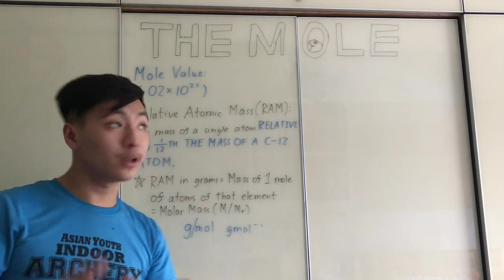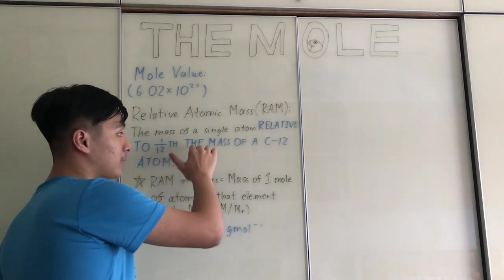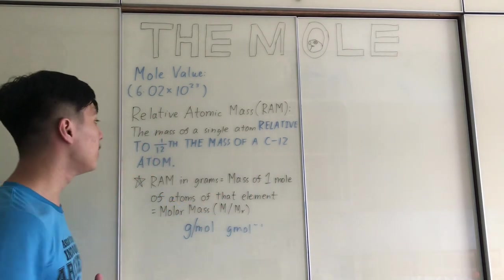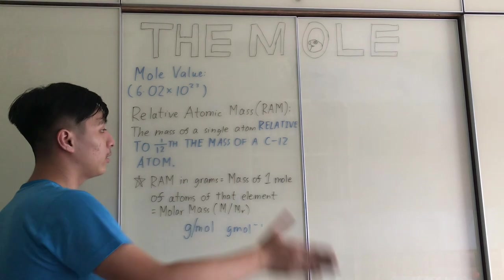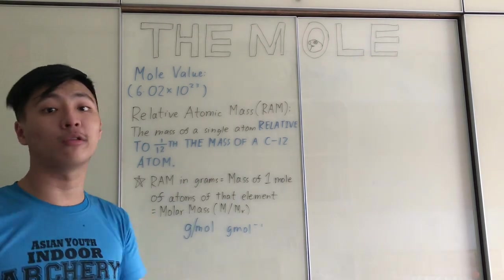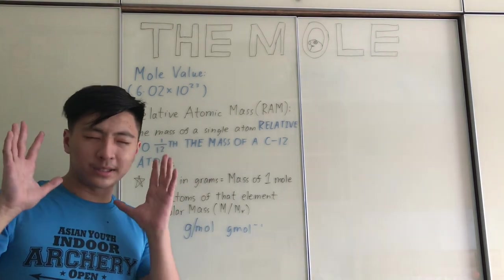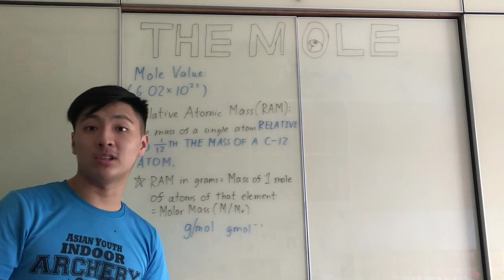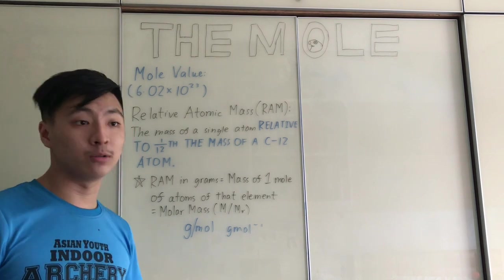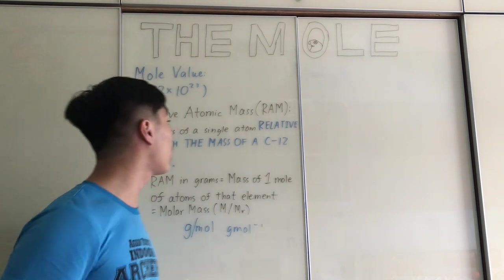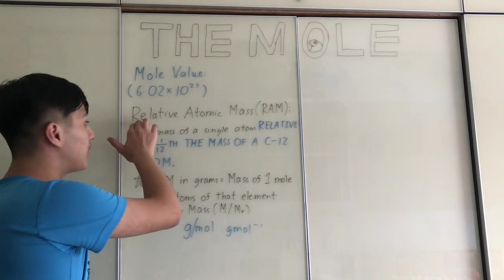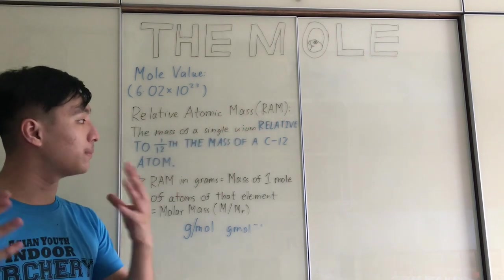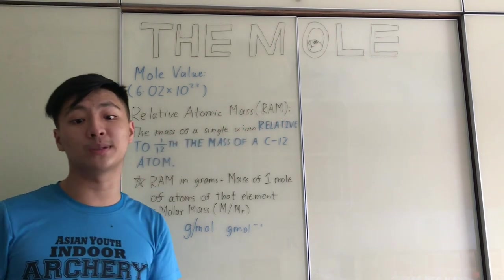I want you to write down this definition as clearly as you can, preferably in the way I've written it here. There are so many students every year — whether IGCSE, A-level, or IB — who always lose marks on the definition for relative atomic mass because of a silly mistake, which I'm going to explain now.